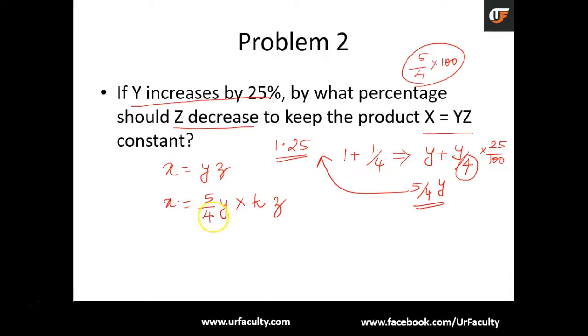Into some value of K into Z should maintain as what? X. How about the easiest way to do it? We know that this is multiplied by 5 by 4, and to make that value cancel out, we just need to multiply this portion by 4 by 5. So what happens? 5 by 4Y into 4 by 5Z is equal to what? You can easily cancel these out, so it still remains at YZ. At least we know that the new value of Z is equal to 4 by 5 of Z.